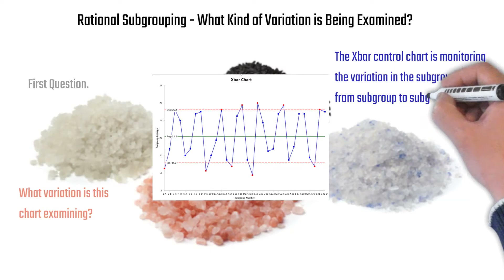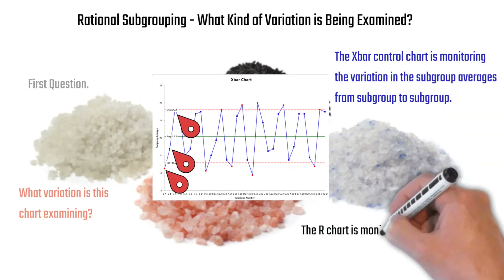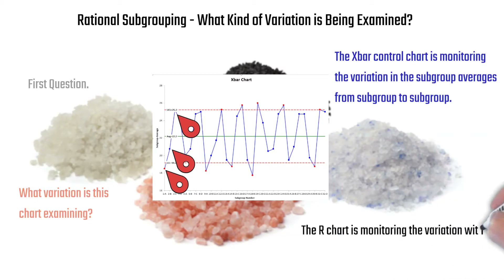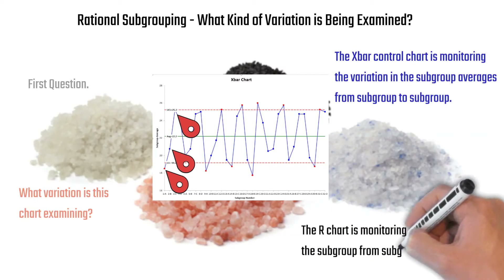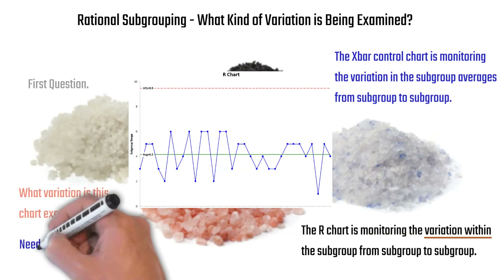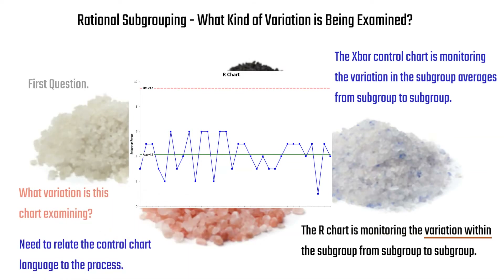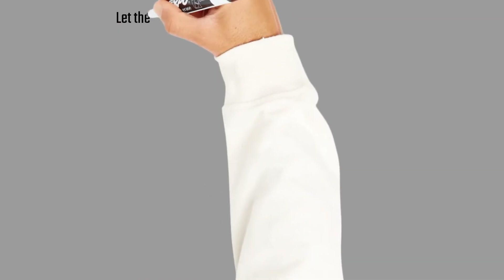The X-bar control chart monitors the variation in subgroup averages from subgroup to subgroup, while the range chart monitors the variation within the subgroup from subgroup to subgroup. You need to be able to relate these to your process — like shift-to-shift variation, day-to-day variation, etc.